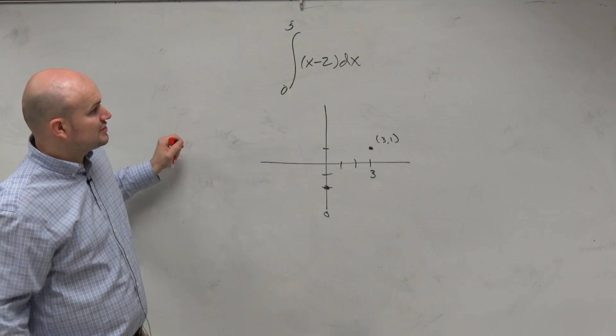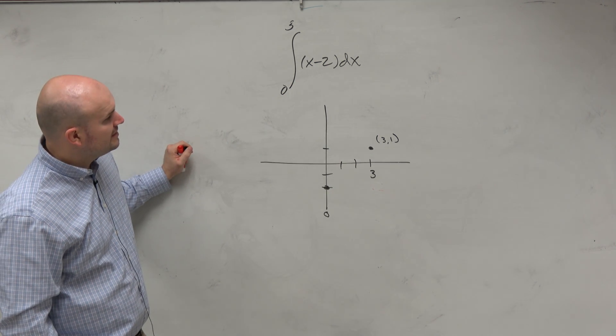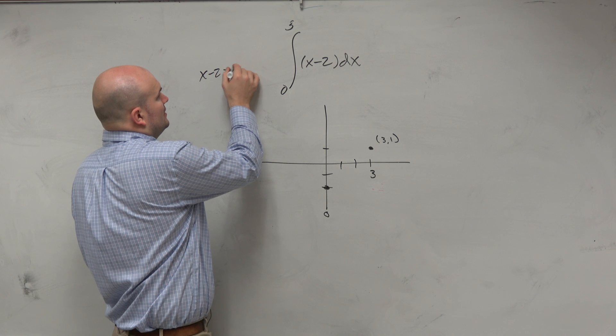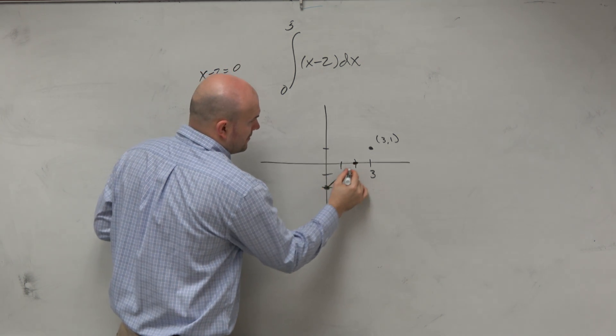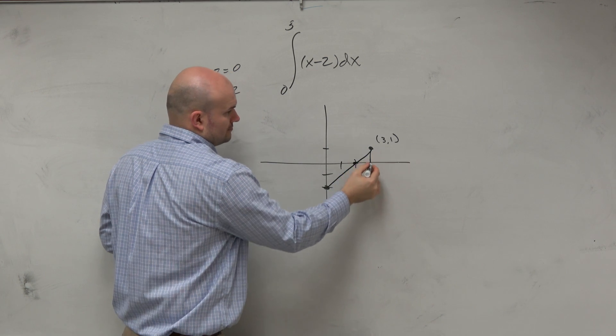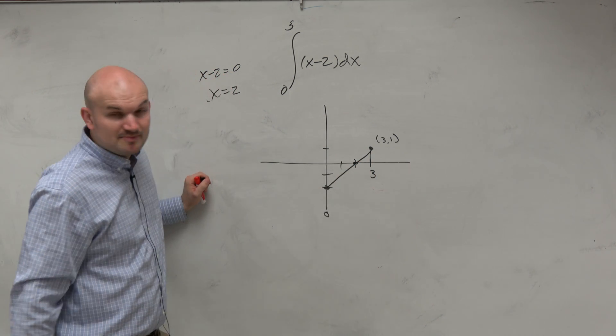And if we want to figure out where this graph crosses the x-axis, we could just set x minus 2 equal to 0 and say x equals 2. So there's the x-intercept there. And we can see that's basically what we're looking at.